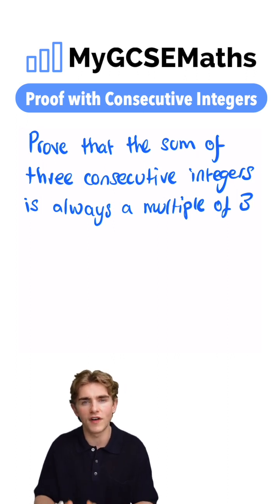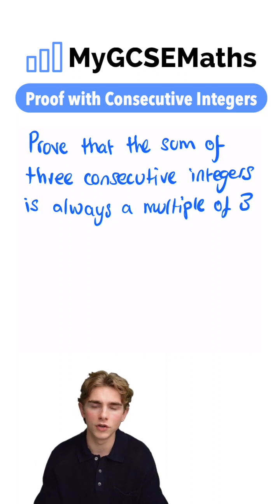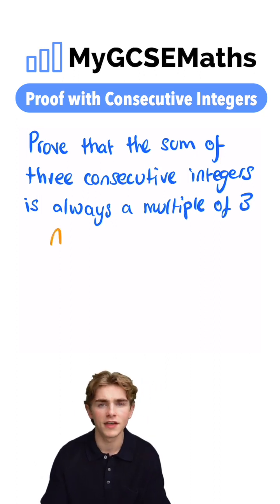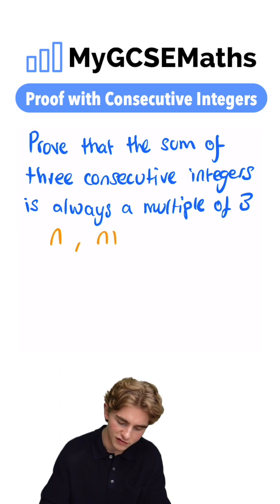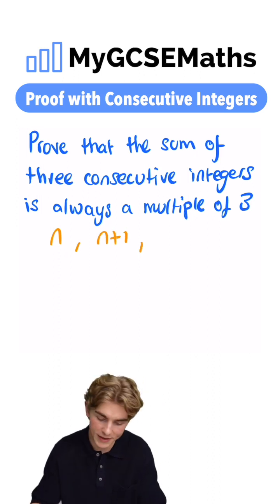For example, three, four, and five. To write these in general, what can we do? Well, we're going to call our first integer n. Then the integer after that is going to be n plus one. And the integer after that is going to be n plus two.